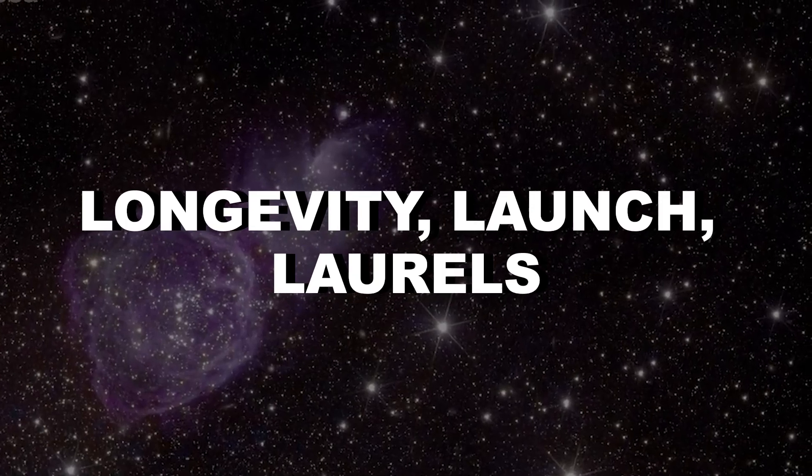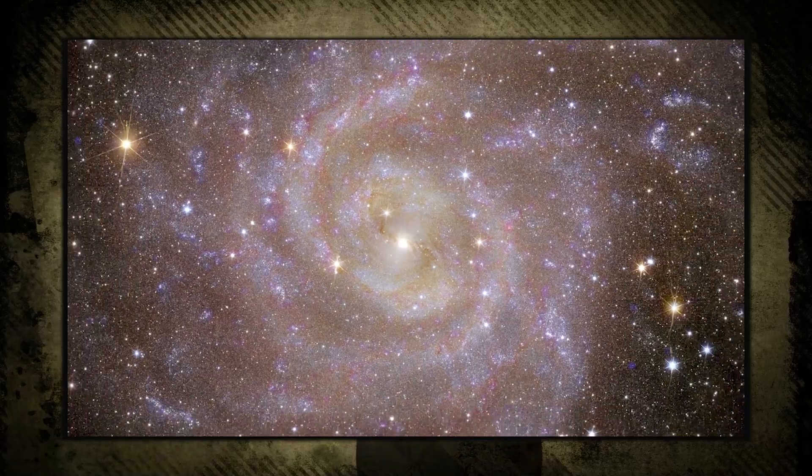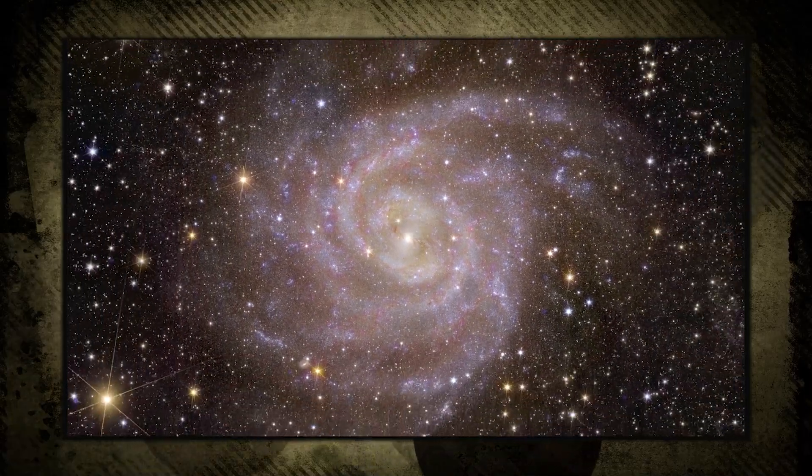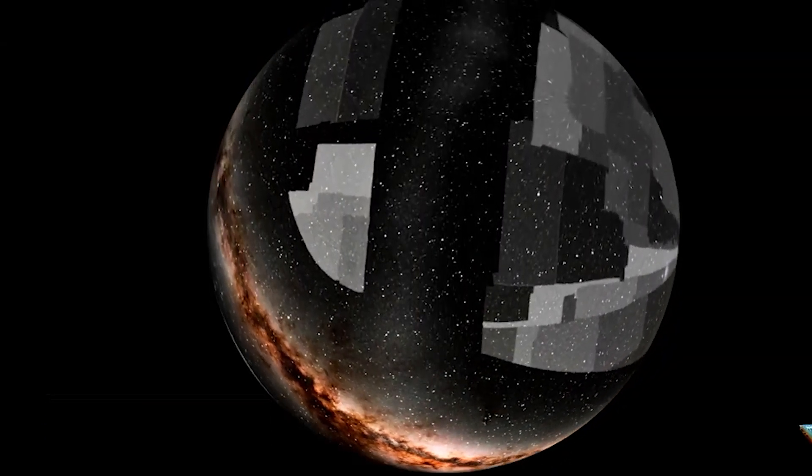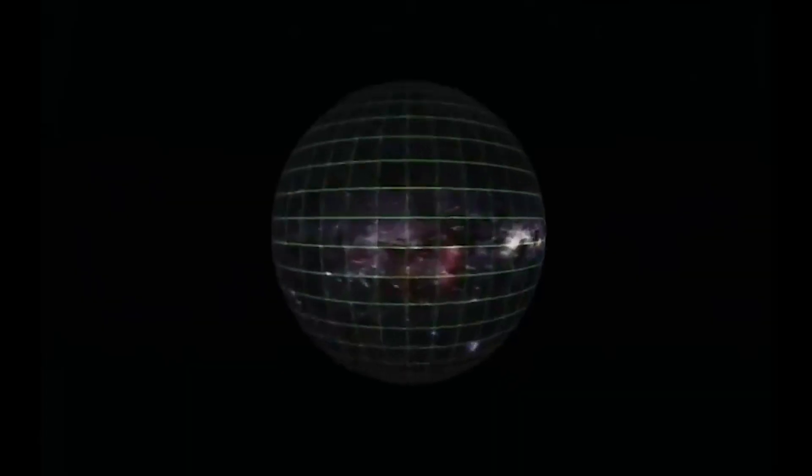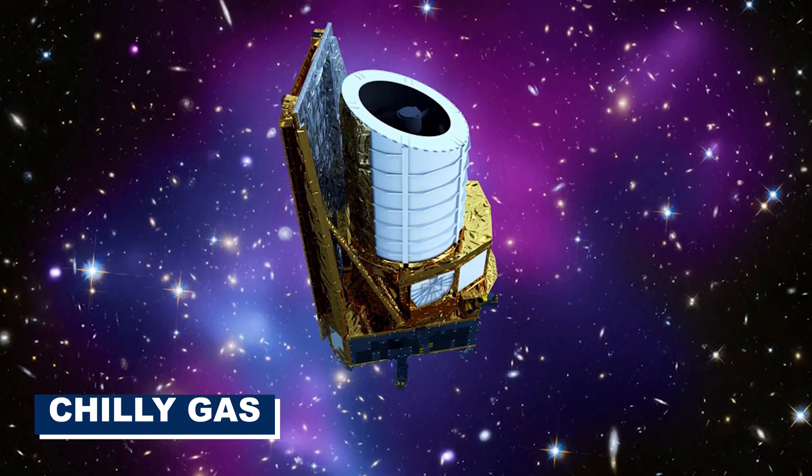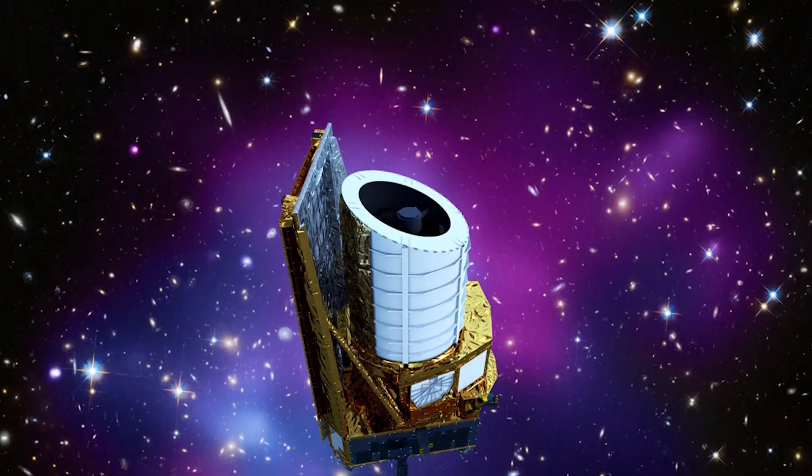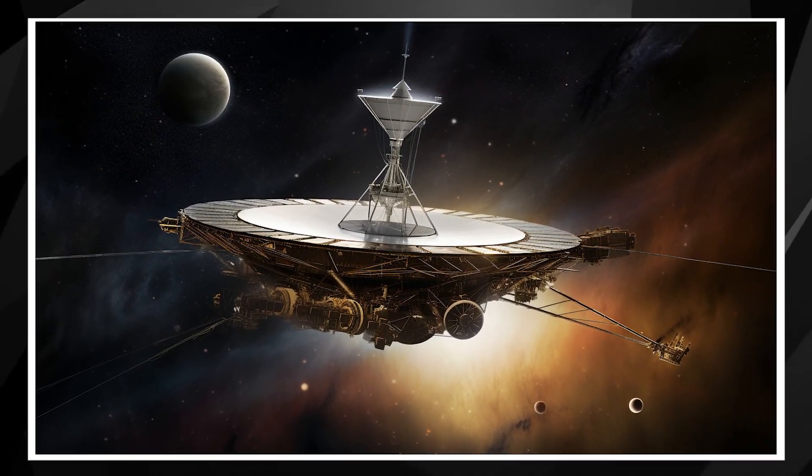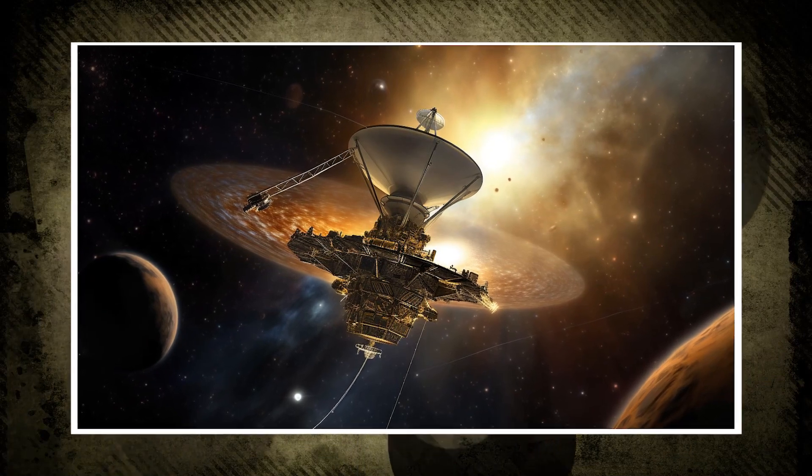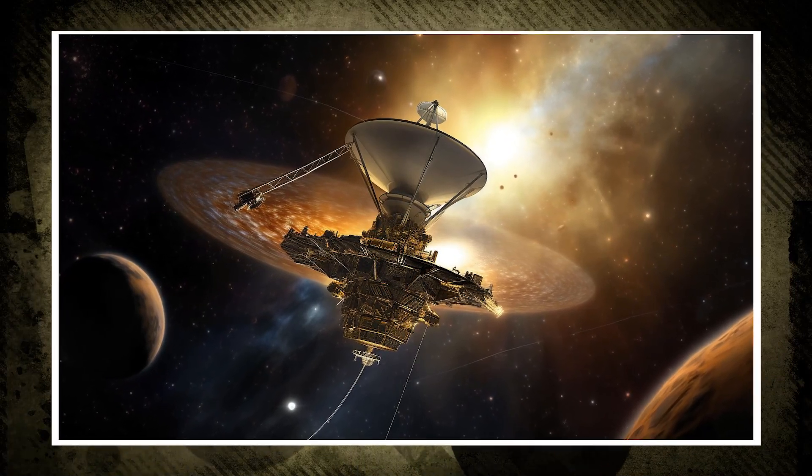Longevity, launch, laurels. Now let's talk longevity. Euclid is no one-hit wonder. It's got a mission lifespan of six years, and if all goes well, fingers crossed, it may extend its stay. The only limit? The amount of chilly gas it's got for propulsion. So, here's to Euclid, the interstellar voyager, making geometry enthusiasts and space lovers do a happy cosmic jig.